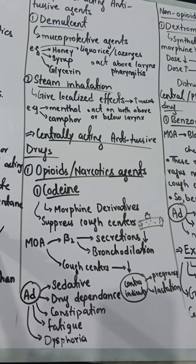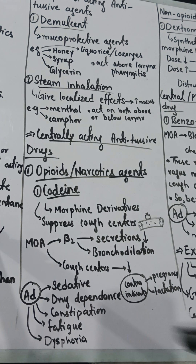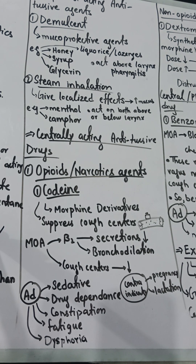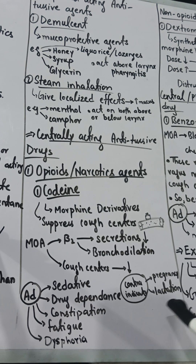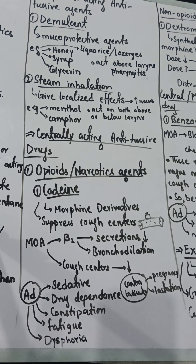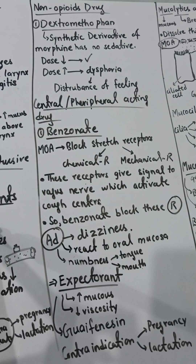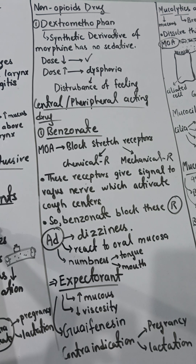Doctors do not usually prefer codeine due to its side effects, but may prescribe it based on patient condition. Side effects of codeine include sedation and sleepiness, drug dependence at high doses, constipation, fatigue, and dysphoria (disturbance in the patient's feelings). Contraindications include pregnancy and lactation, as codeine can cross to the fetus and cause adverse effects. Due to these side effects, non-opioid drugs are preferred.